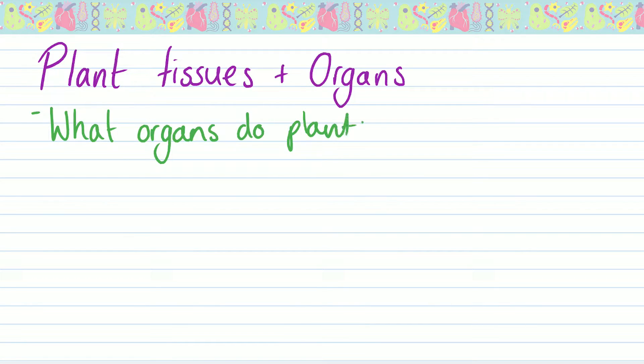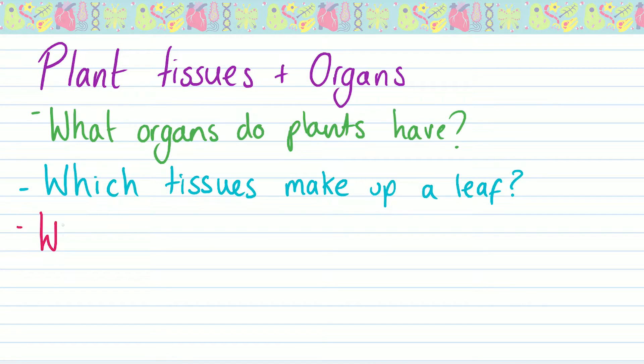Hi everyone, welcome back to GCSEezy. We're going to be covering some more of the organisation topic today, having a look at plant tissues and organs. We're going to be looking at what organs plants have, the tissues that make up the leaf in particular, and what makes leaves so fantastic at grabbing that light energy and using it to turn carbon dioxide and water into glucose and oxygen. Make sure, as always, you grab some paper, grab some pens, and follow along with me.